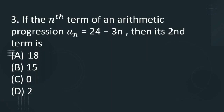The third question is: nth term of an arithmetic progression a_n is equal to 24 minus 3n, then the second term is A: 18, option B: 15, option C: 0, option D: 2.